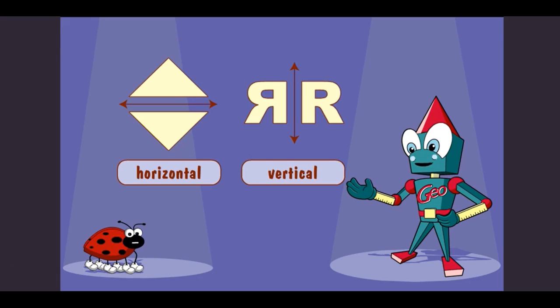Awesome thinking! So some reflections are horizontal, and some are vertical. That's a great way to think about it, little guy. Thanks, Gio.